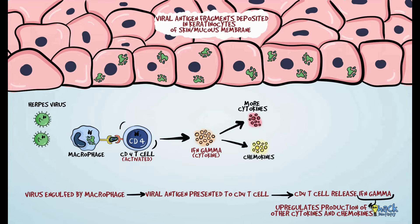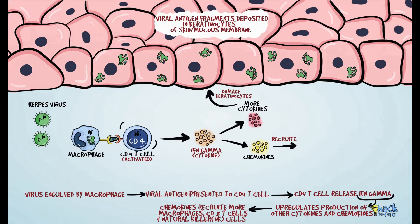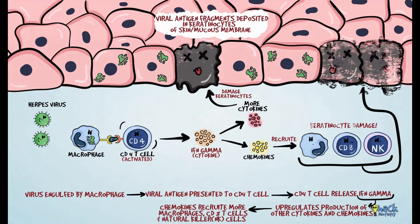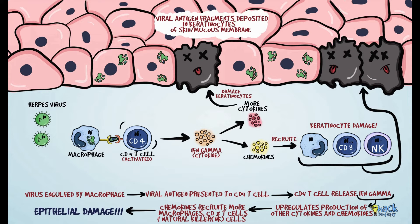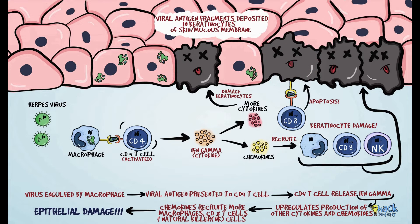Interferon gamma upregulates the production of other cytokines and chemokines. These cytokines damage keratinocytes, and chemokines further recruit macrophages, CD8 T-cells (cytotoxic T-cells), and natural killer cells — all of which cause epithelial damage. Keratinocytes may also present these antigens to CD8 T-cells via MHC molecules, and the CD8 T-cells recognize these antigens and induce apoptotic cell death of the keratinocyte.